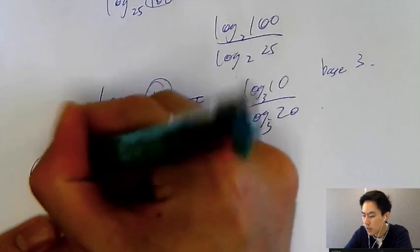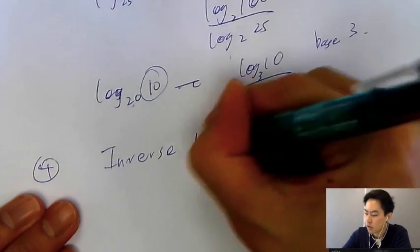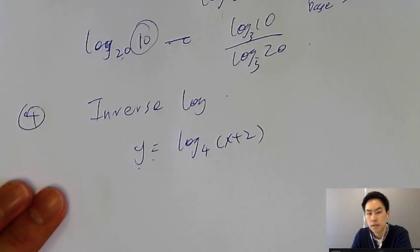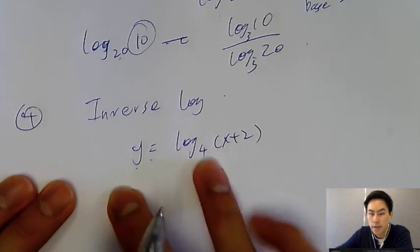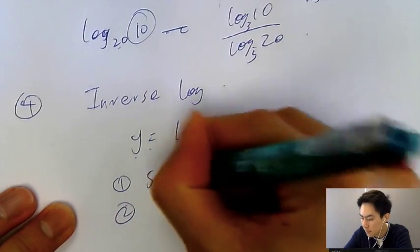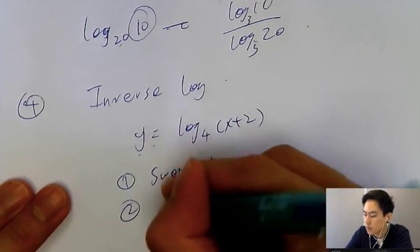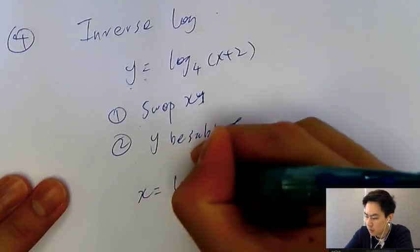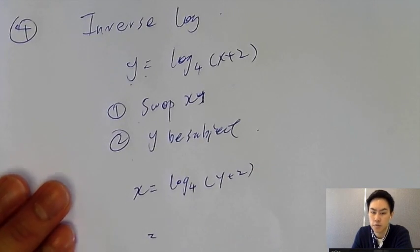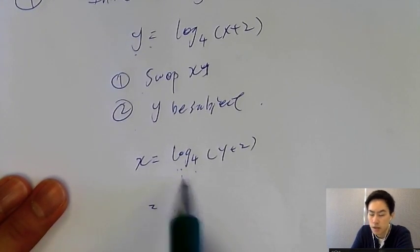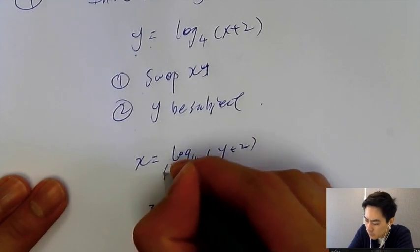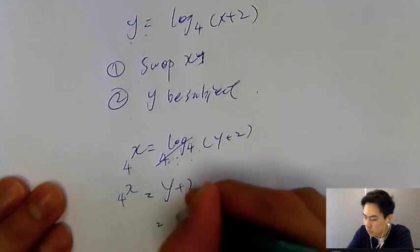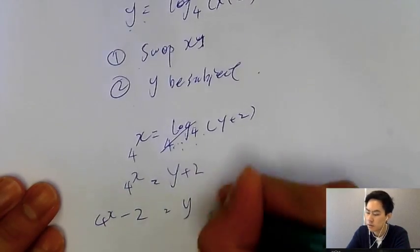The fourth question type is inverse log, which is more popular in recent exams. For example: find the inverse of y = log base 4 of (x + 2). Step 1: swap x and y → x = log base 4 of (y + 2). Step 2: make y the subject — cancel out log base 4 by raising both sides to power 4: 4^x = y + 2, so y = 4^x − 2. That is your inverse function.